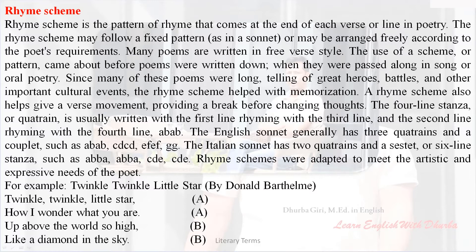The Italian sonnet has two quatrains and a sesta, or six-line stanza, such as A-B-B-A, A-B-B-A, C-D-E, C-D-E. Rhyme schemes were adapted to meet the artistic and expressive needs of the poet.